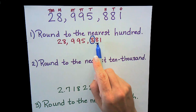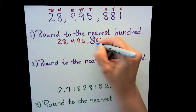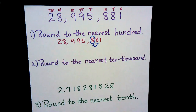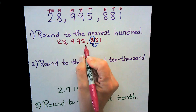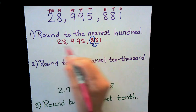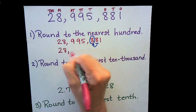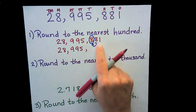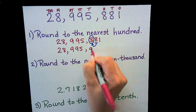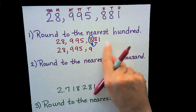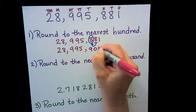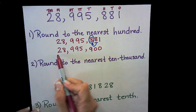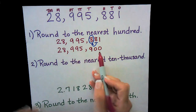Notice that the underlined digit is five or bigger, so we're going to bump up the number we circled. All the numbers to the left stay the same. The digit we circled gets bumped up — that becomes a nine — and all the digits to the right become zeros. Our final answer is 28 million, nine hundred ninety-five thousand, nine hundred.